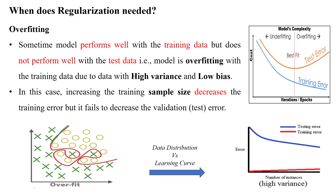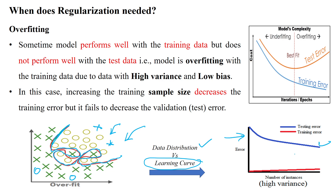This classification boundary line is perfectly classifying the given dataset — there is not even a single data point misclassified in the training data. But when you use the testing data, you will get errors and misclassifications. The data distribution and the learning curve for this overfitting are shown here. This situation demands reducing the overfitting by applying regularization methods.